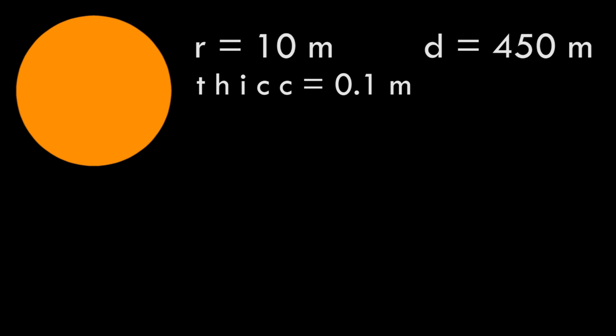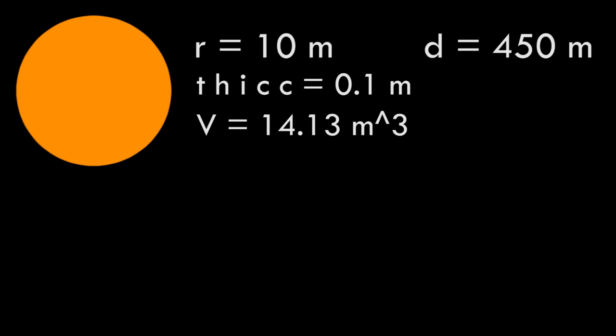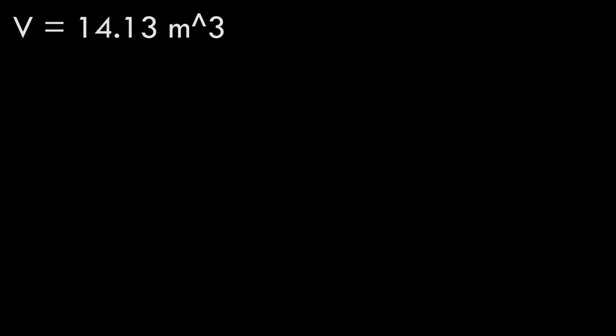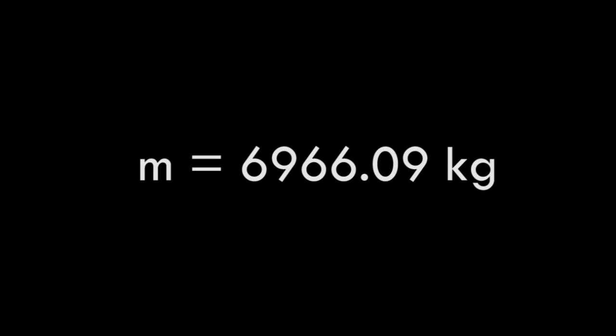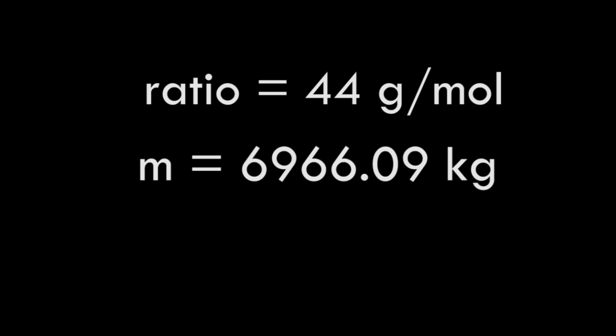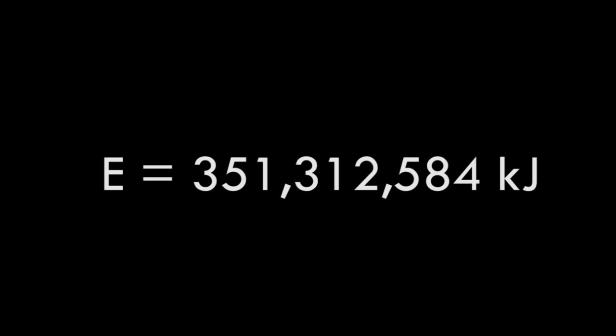Assuming the flame thickness is 0.1 meters, and using the formula for the volume of a hollow cylinder, we get 0.1² × 450π, giving a volume of 14.13 m³. Using propane's density of 493 kg/m³, the mass of propane is 6,966.09 kg. With a molar mass ratio of 44 g per mole, dividing gives us approximately 158,320 moles of propane. Scaling the energy of 2,050 kJ/mol by 158,320 moles, the total energy of this fire is approximately 351,312,584 kJ of heat energy.